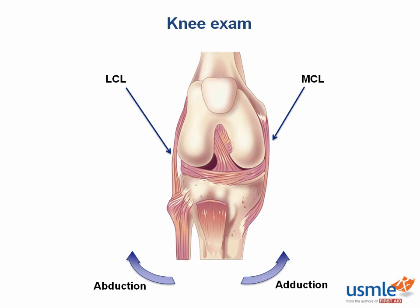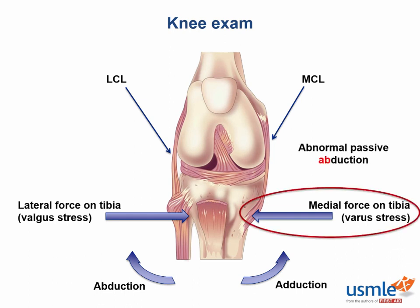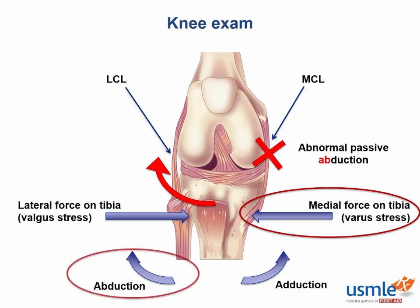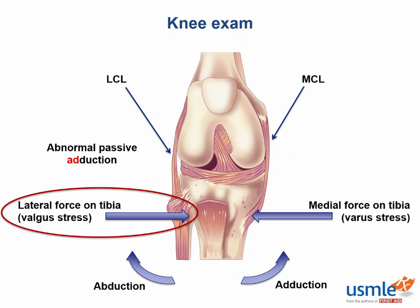How can we test these ligaments? By stabilizing the knee and exerting a medially directed, or valgus force, or a laterally directed, or varus force on the tibia. The valgus force tests the MCL, and the varus force tests the LCL. If the MCL were out, you would expect a hinging motion in abduction. An abnormal passive adduction test is when you apply a medial varus force on the tibia — if the LCL is out, you'll see hinging in adduction.